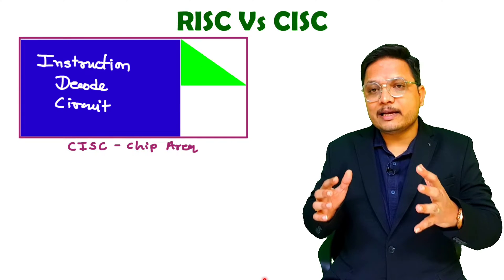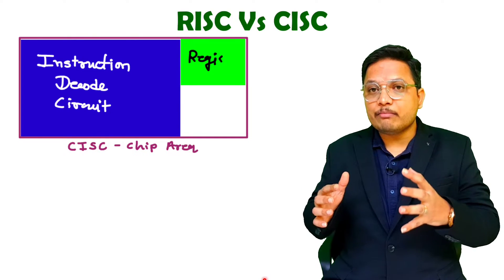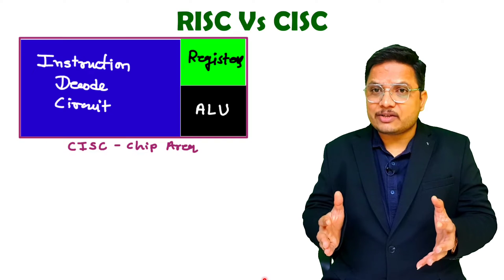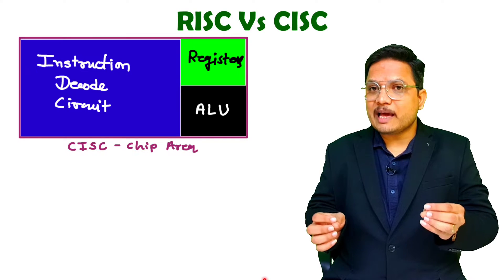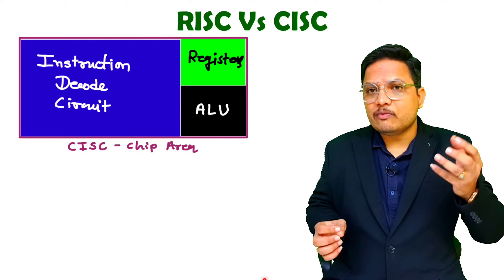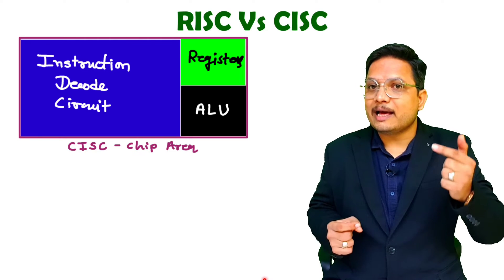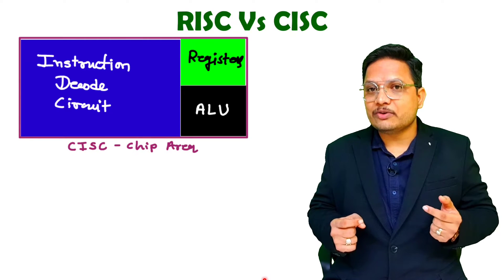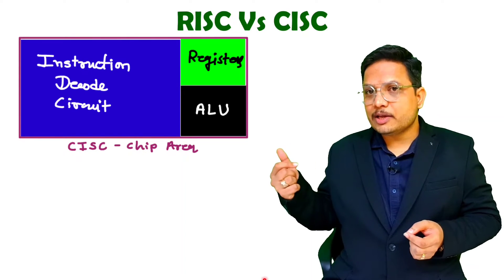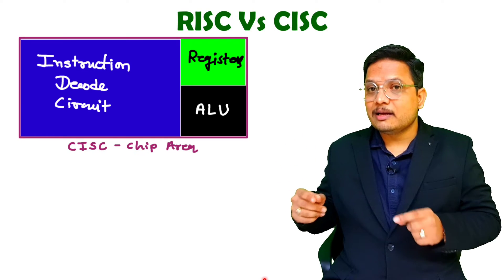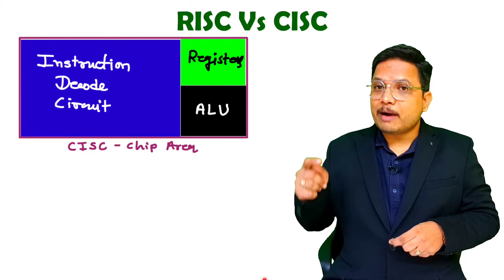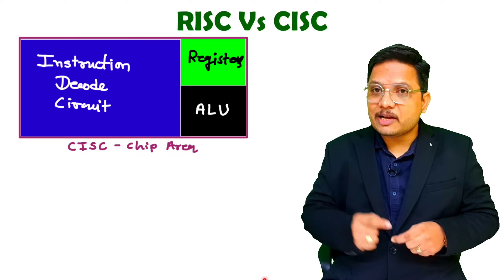As it is having more area covered with the instruction decode section, you will be having very less area available for registers and the arithmetic and logic unit, or you can say the execution unit. So here you see with CISC architecture, the major portion of area is covered by the instruction decode section.